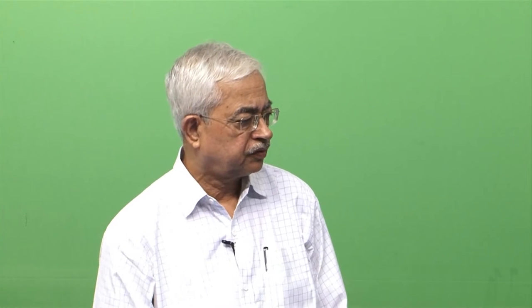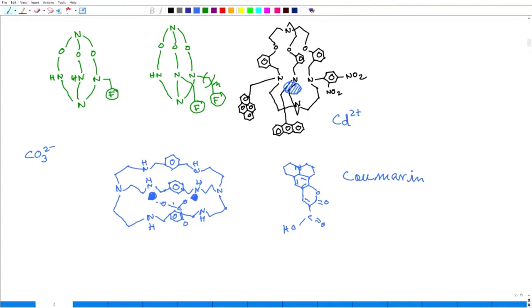Good morning. In my previous class, I was looking at this carbonate sensor. You take this cryptan and make a di-copper complex, a di-copper cryptate. The distance between the two copper centers and the carbonate moiety is optimum, so that carbonate forms a very strong complex with copper.